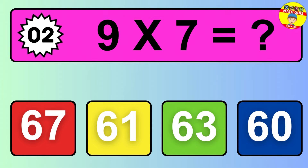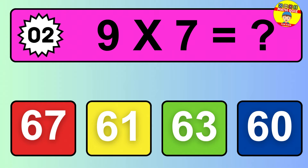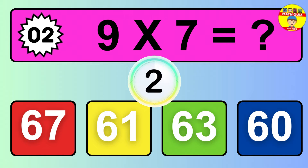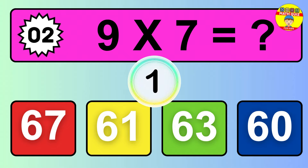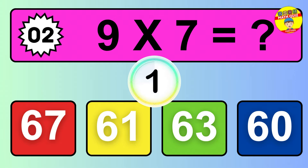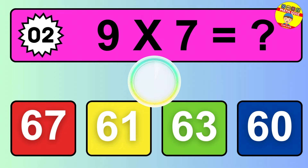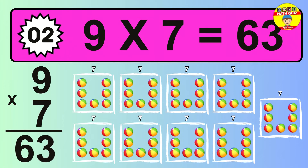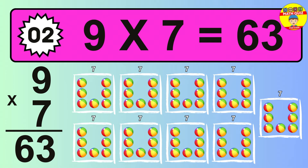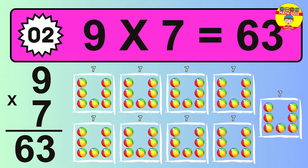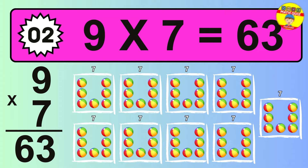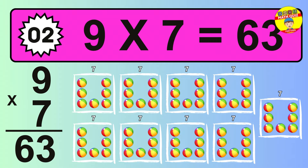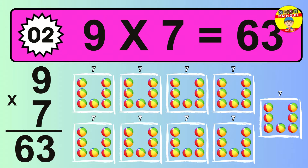Question 2. 9 times 7 equals what? The answer is 9 times 7 is 63. To calculate, we have 9 groups with 7 balls each one. So, how many balls do we have? 63 balls.